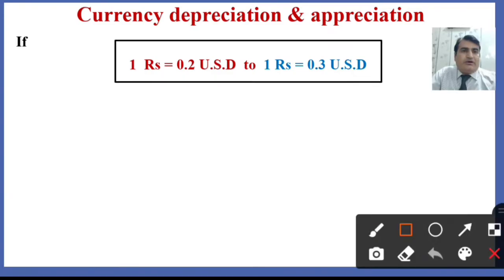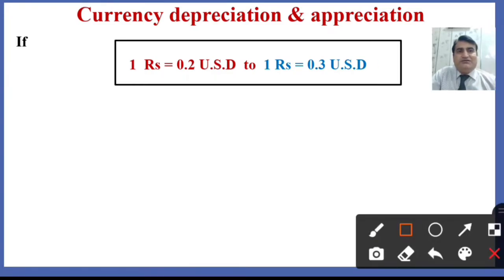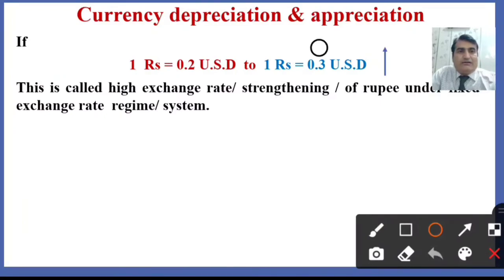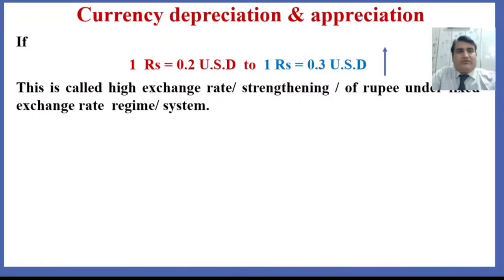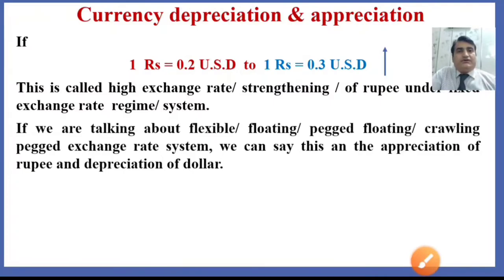If the exchange rate of the rupee in terms of dollar moves from 0.2 to 0.3 US dollar, now 0.3 US dollars are required instead of 0.2 — meaning more dollars are required to purchase one rupee. This is the high exchange rate or strengthening of the rupee under a fixed exchange rate regime. Under a flexible or floating exchange rate system, this is an appreciation of the rupee and depreciation of the dollar.